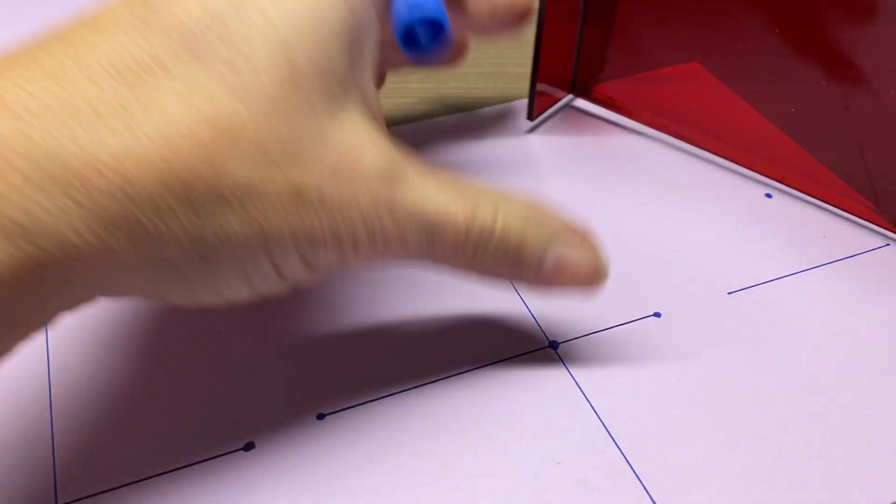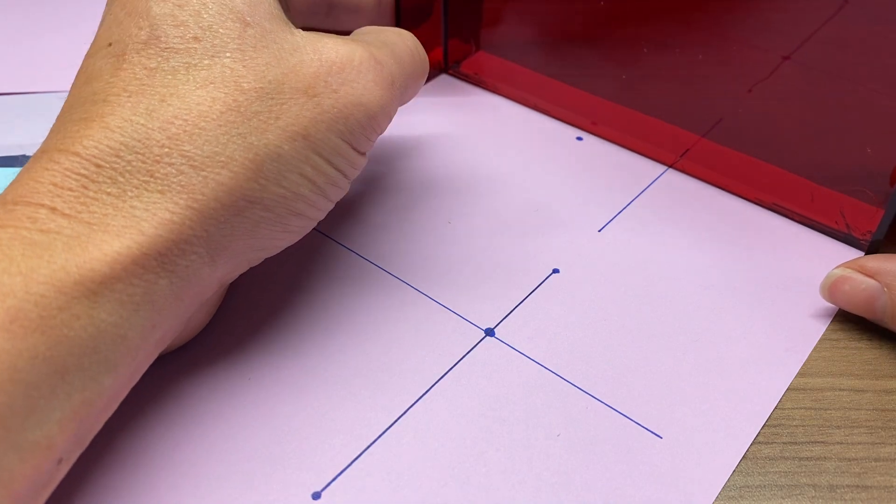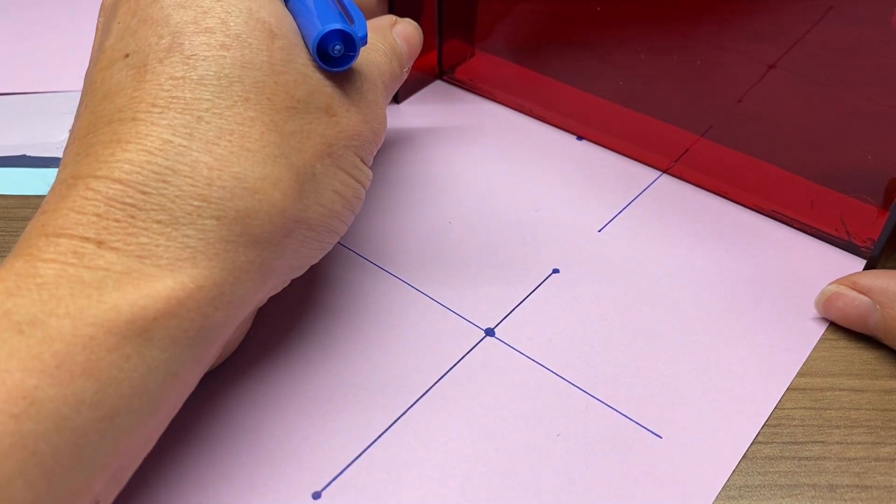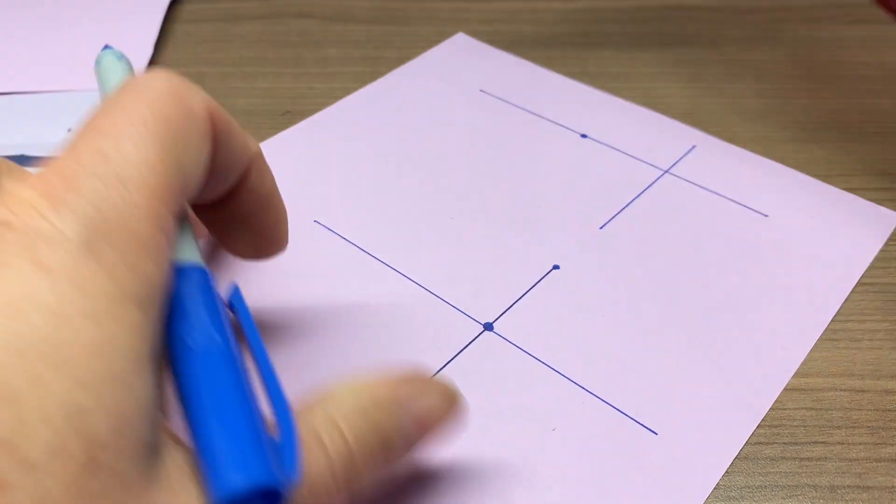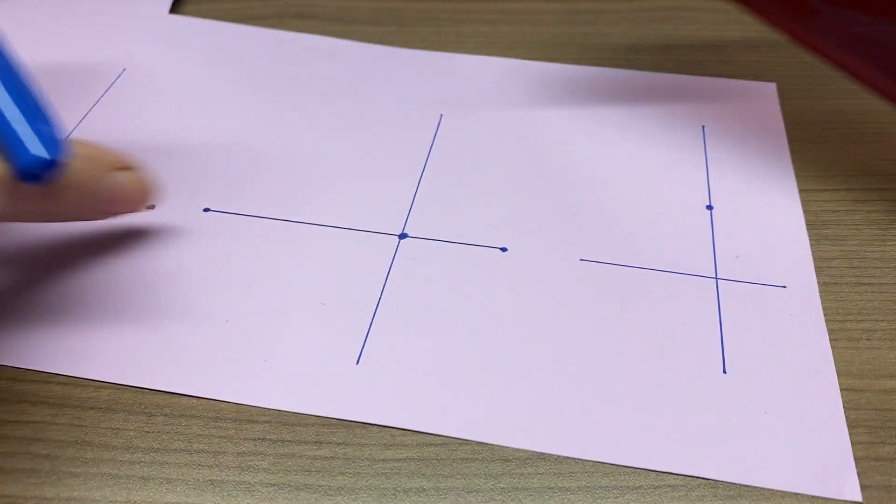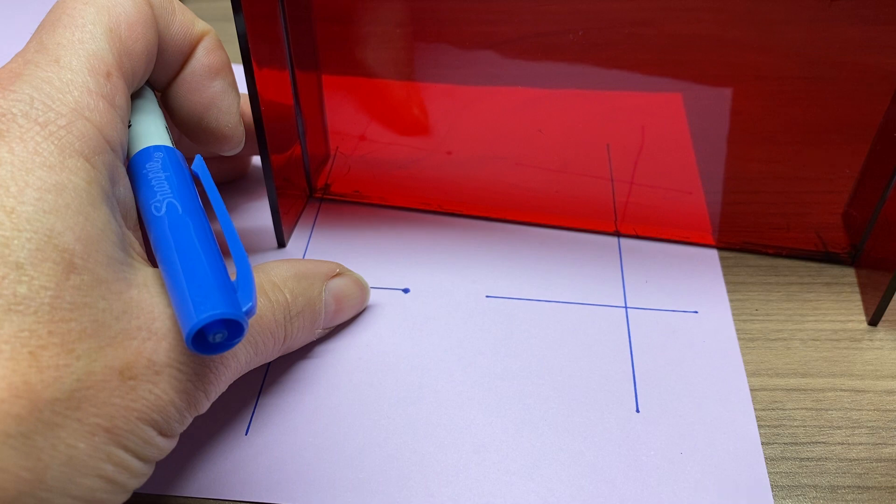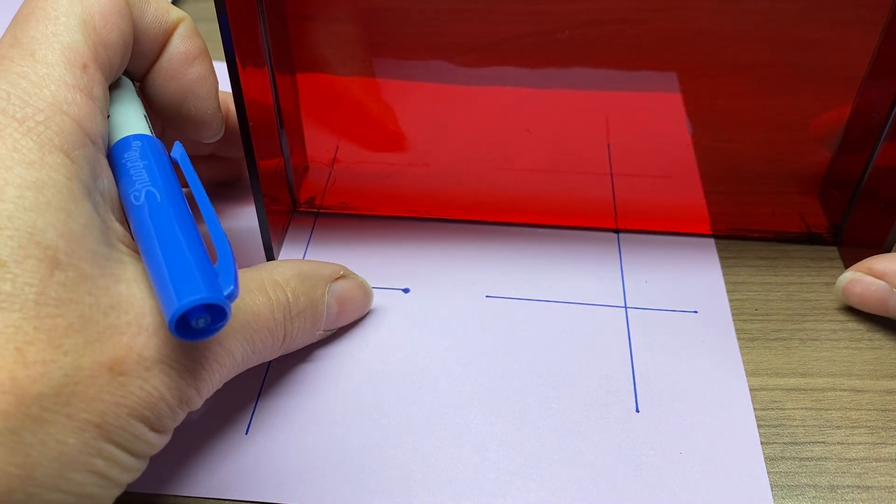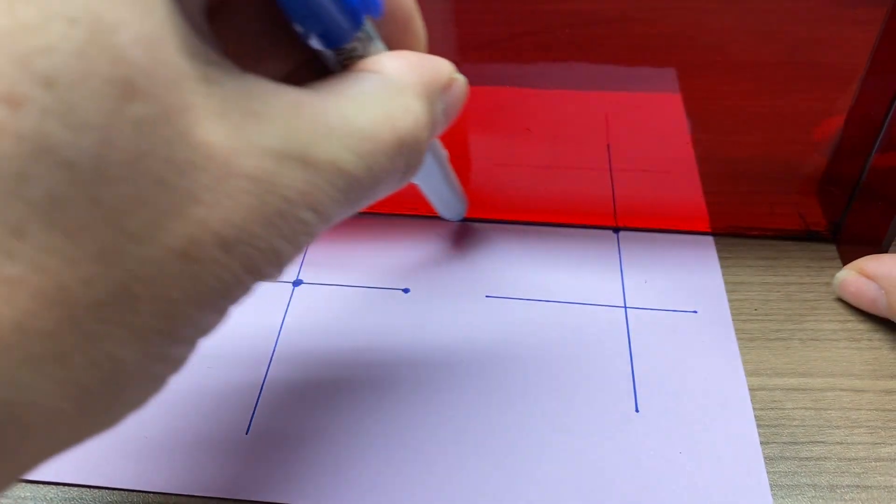And finally, we want to make sure that we line up the line segment down here, then scoot it forward until it goes through that point above, and then we draw. To complete the parallel, we simply line up—you can see we're looking through to line that up again—right on that point, and draw. That's it.